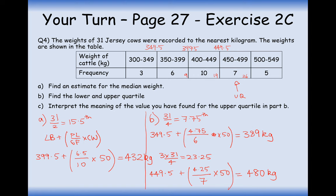Part C asks us to interpret the upper quartile found in part B. The interpretation is that three-quarters of the cows weigh under 480 kilograms, or equivalently 25% of the cows weigh over 480 kilograms. Make sure you have lots of practice at linear interpolation and with discrete data, following those certain rules. Ask your teacher for help if needed, and go ahead and answer questions from Exercise 2C. Thanks very much for watching.